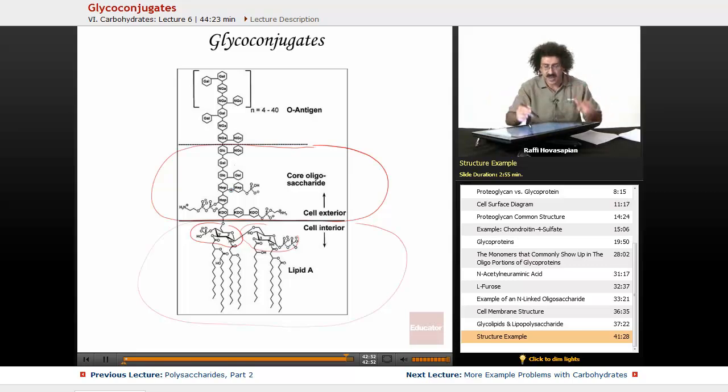What is different from bacteria to bacteria, or at different places along the bacteria, is this thing right here. This is the thing that changes. The core is the same, but this changes, and depending on what collection of monomers and what glycosidic bonds are connecting them, that's going to be the point of recognition. We call this the O antigen.